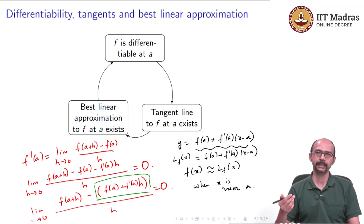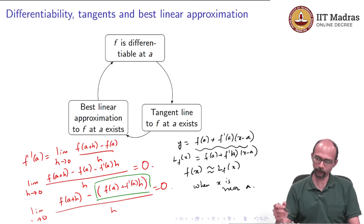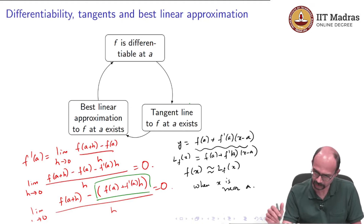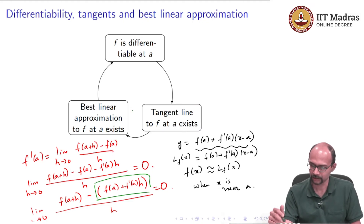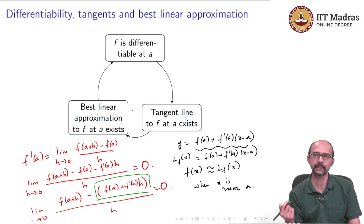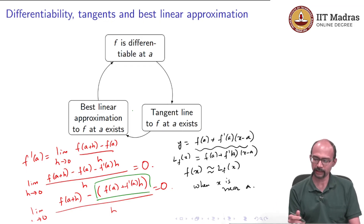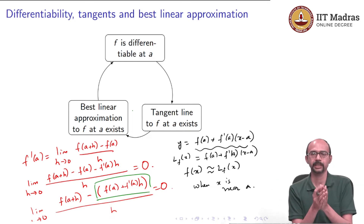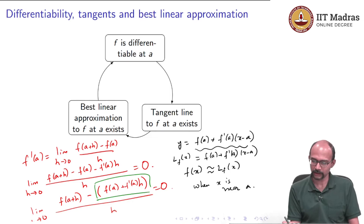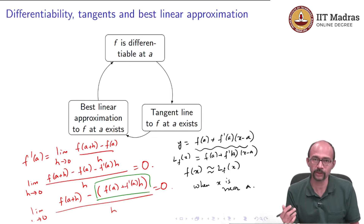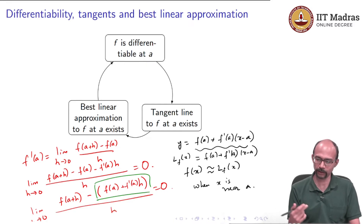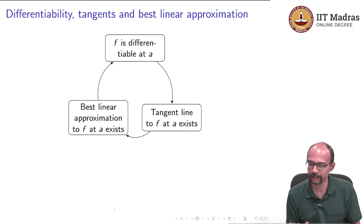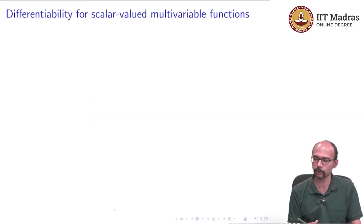When we start talking about differentiability in several variables, this is exactly the kind of thing we want to imitate. We want the same trichotomy: differentiability is the same as the existence of the tangent hyperplane, which is the same as the best linear approximation existing. And then when we take the difference between the best linear approximation and the function values, that has something to do with the magnitude of h. Now when we go to higher dimensions, h itself is going to change because it will be a vector, so we have to take that into account. Let us define what differentiability means for scalar valued multivariable functions.